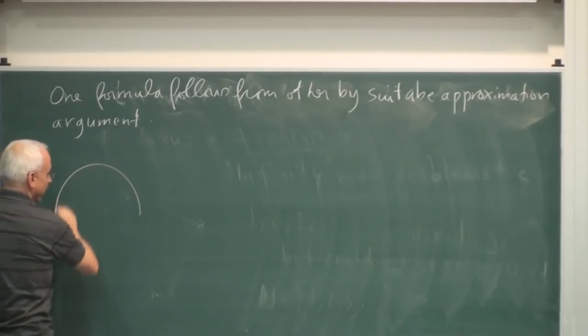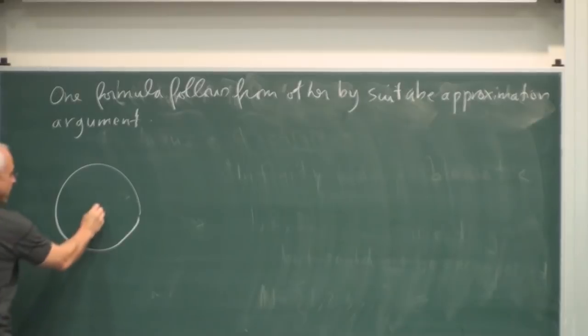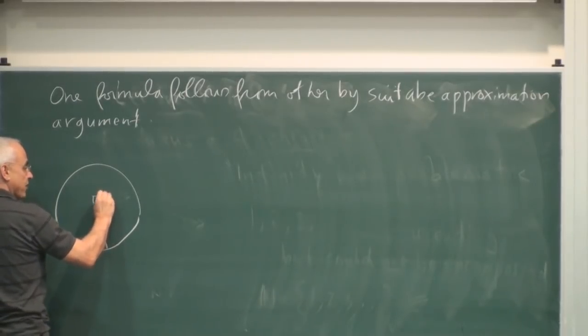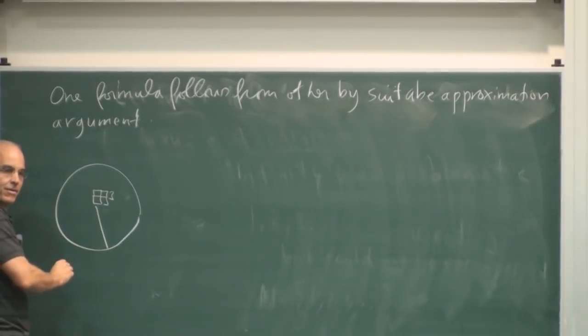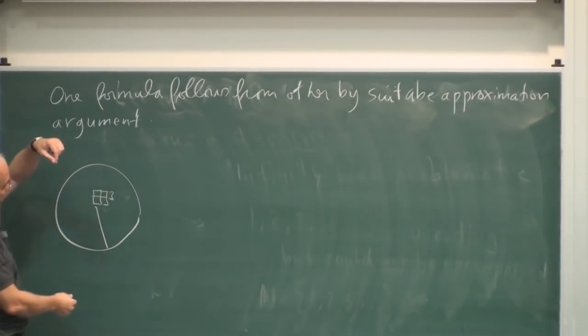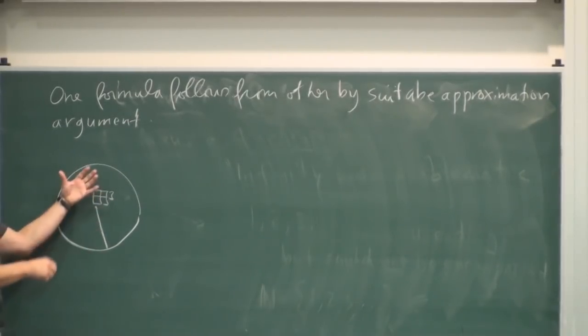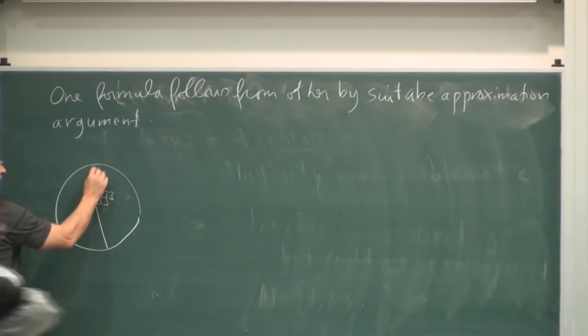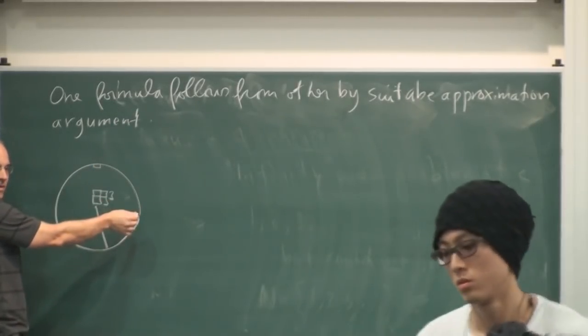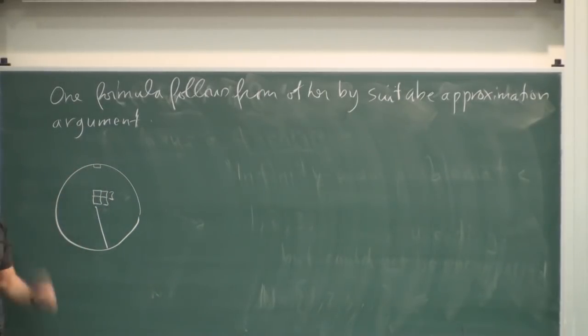So if we have a base circle with radius r and the area of the base is πr², and if the height is h, then the volume is πr²h divided by 3. And the kinds of arguments that Eudoxus was familiar with would have allowed him to go from one of these results to another, because he thought about dividing such a volume into lots of little pieces and then adding up the cumulative little volumes. So one formula follows from the other by a suitable approximation argument.